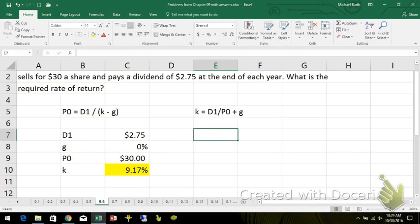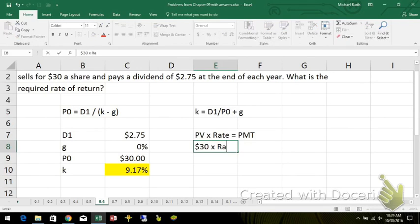If you take the present value times the rate, that gives you the PMT. When you apply this to preferred stock, it's still the same thing. $30 times rate would equal $2.75, so your rate would equal $2.75 divided by $30.